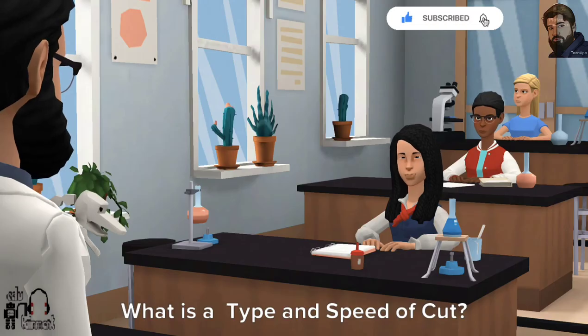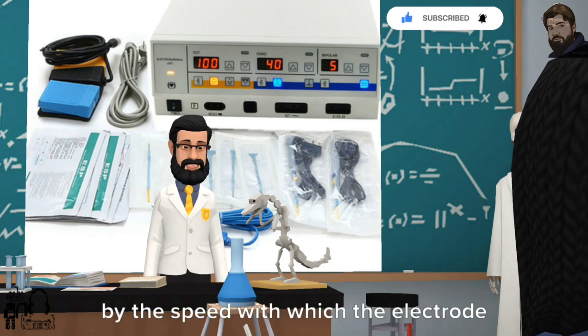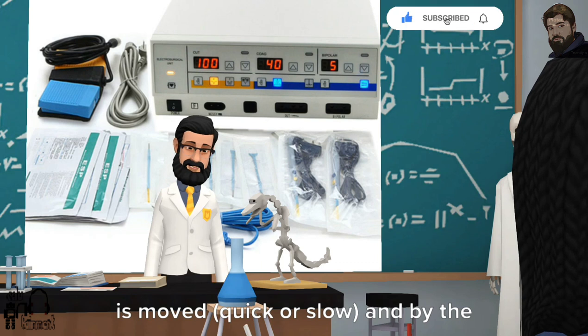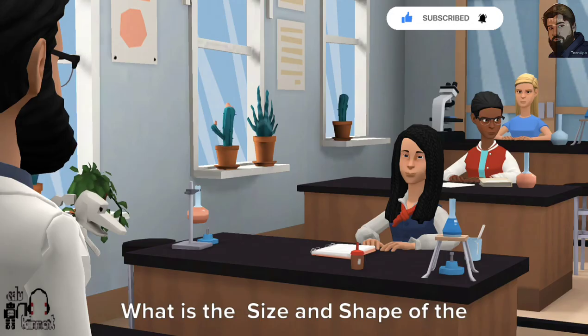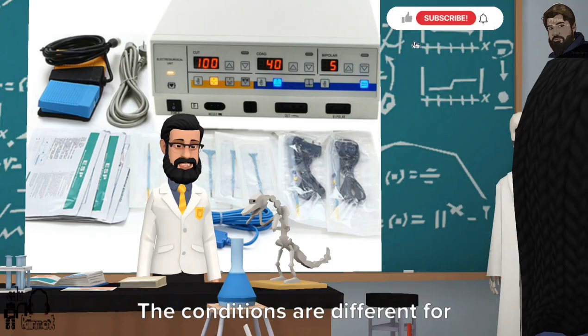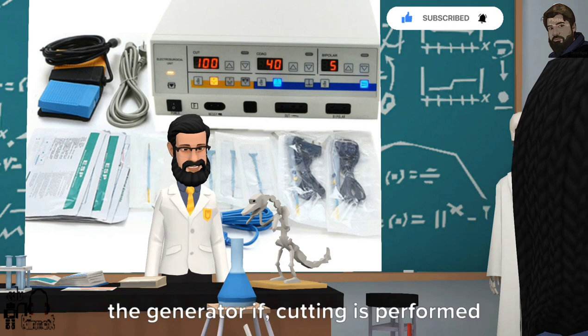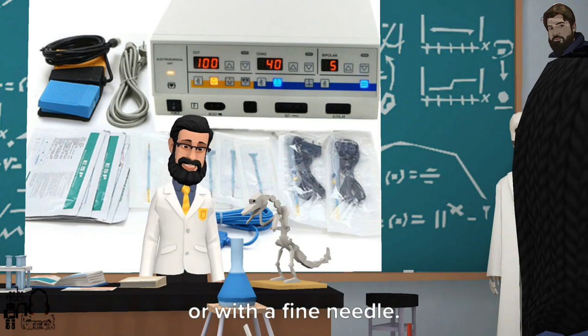What is the type and speed of cut? The cutting quality is determined by the speed with which the electrode is moved, quick or slow, and by the type of cut, superficial or deep. What is the size and shape of the cutting electrode? The conditions are different for the generator if cutting is performed with electrode of large surface area or with a fine needle.